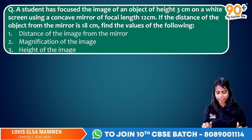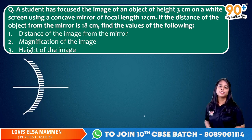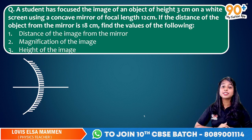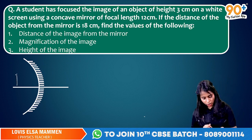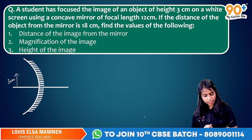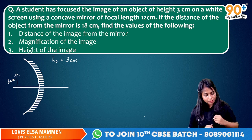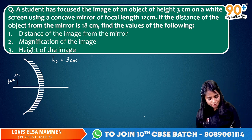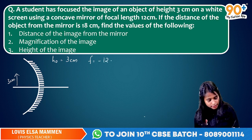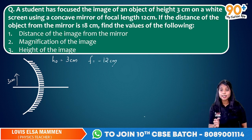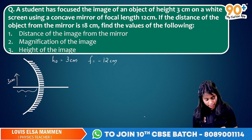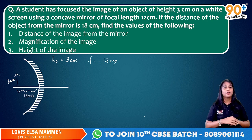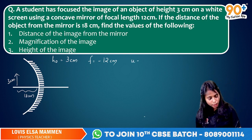It is given that it is a concave mirror. The object height is 3 centimetre, so HO is equal to 3 centimetre. The focal length is 12 centimetre — you know that the focal length of a concave mirror is negative — therefore F is equal to minus 12 centimetre. The object distance is 18 centimetre, so U is equal to minus 18 centimetre.